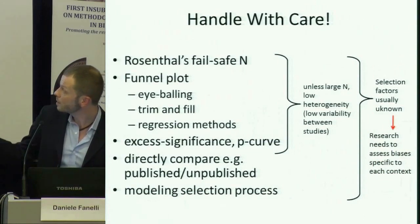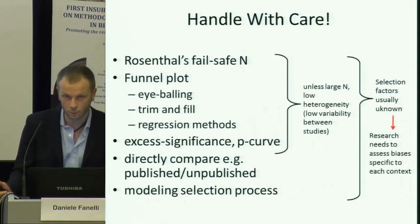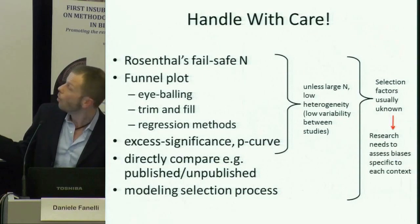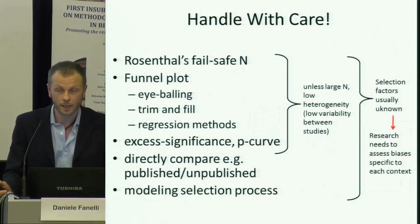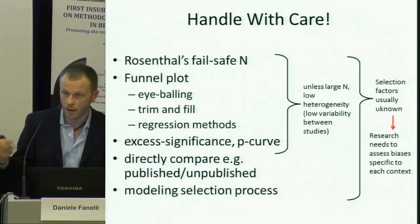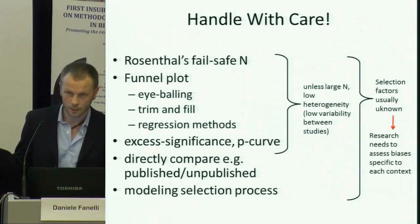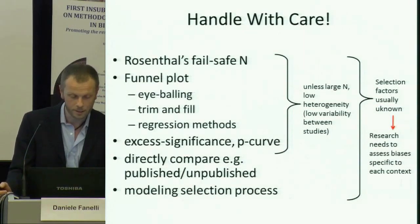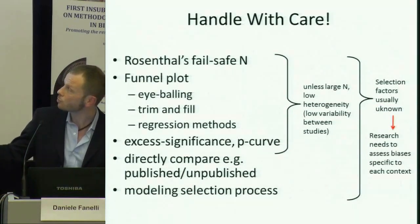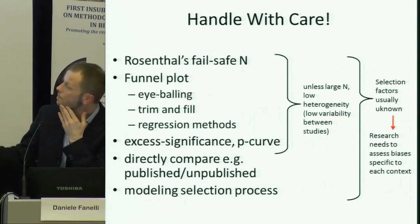The funnel plot methods in particular, typically coming out of a meta-analysis, can only really be trusted when the sample is very large — meaning you have 100 studies or more — and heterogeneity is low, meaning the studies are ideally all done exactly in the same way on exactly the same kind of subjects. Conditions that are very rare in meta-analysis. So in most cases, you can't quite draw any strong conclusions from these methods.